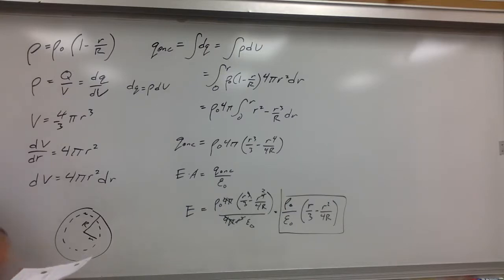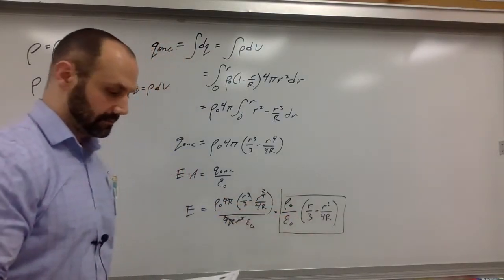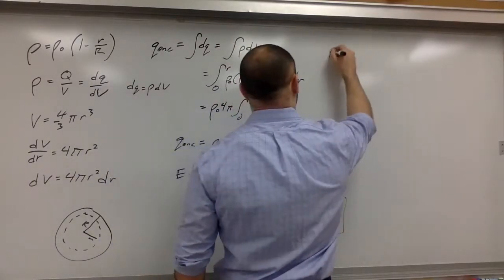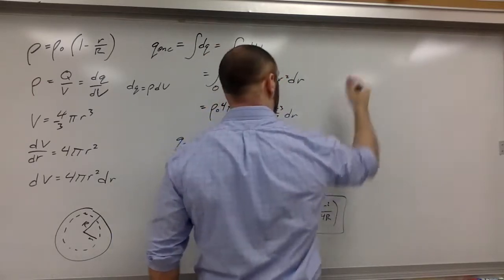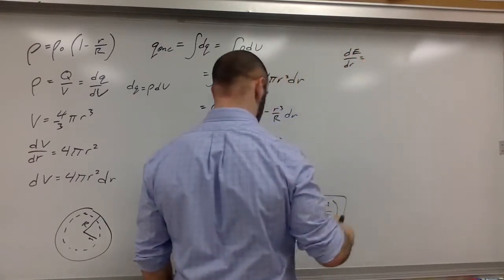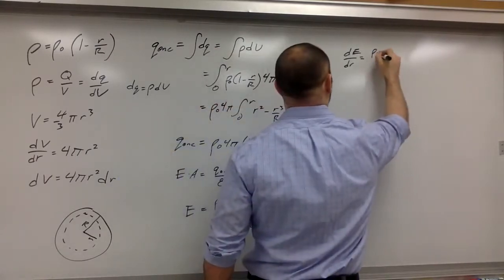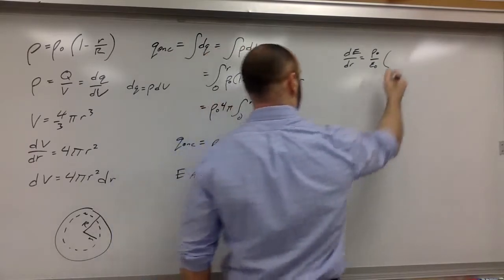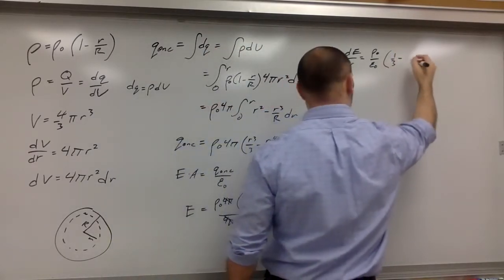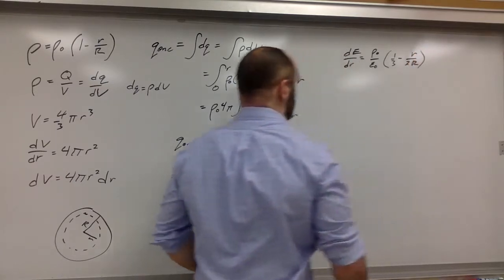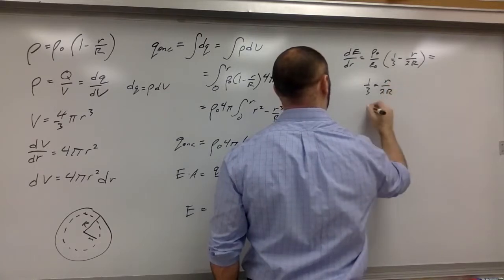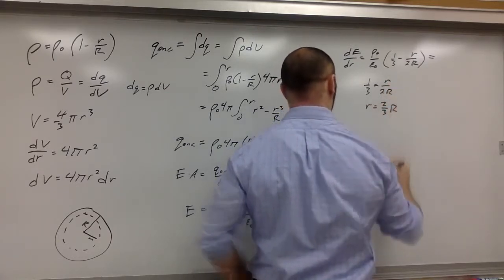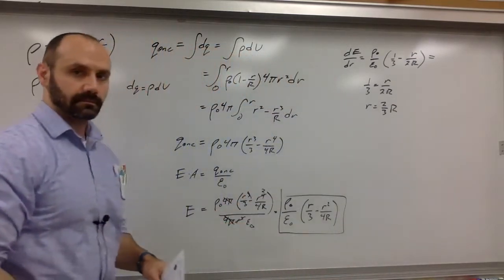Another question: where is the electric field maximum? I take the derivative with respect to r and set it equal to zero. So d/dr of [rho-naught over epsilon-naught times (r/3 minus r squared over 4R)] equals zero. The derivative gives rho-naught over epsilon-naught times (1/3 minus r over 2R) equals zero. Removing the constant factor, 1/3 equals r over 2R, so r equals two-thirds of big R. That's where the maximum electric field occurs.